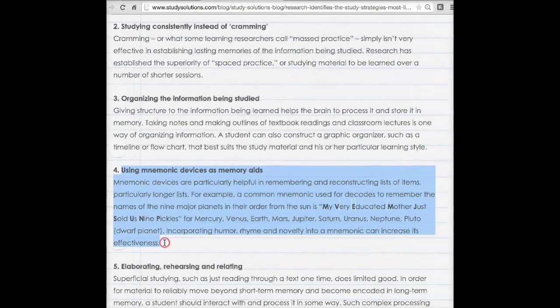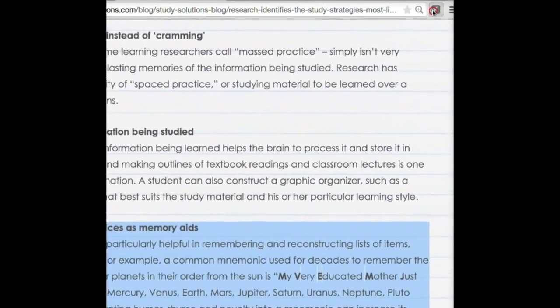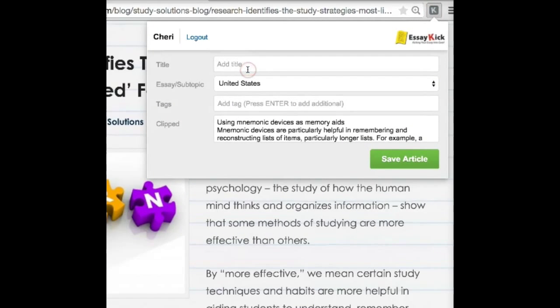Highlight the paragraph, click on the Research Clipper extension, type the title of the article in the box, select the essay and subtopic.